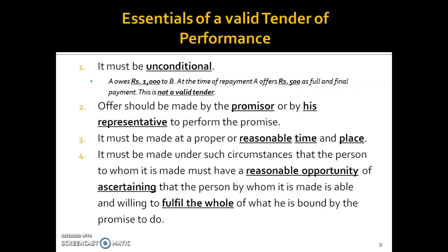It must be made at a proper or reasonable time and place, which depends on a case-to-case basis. For example, if you go to someone's house at 2 or 3 in the night to deliver goods and claim it is a valid tender of performance, it is not valid — it should be at a reasonable time. Regarding place, if a contract is to supply goods in Ahmedabad but the promisor delivers them in Baroda and asks the promisee to collect from there, that is also not a valid tender, as it must match the agreed location.